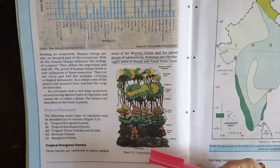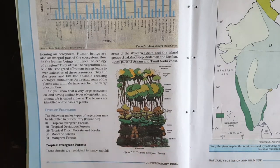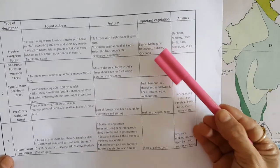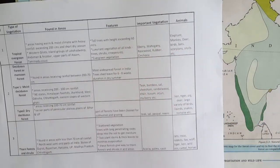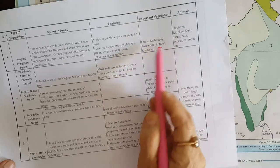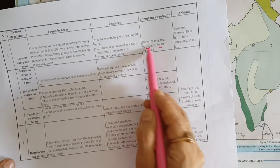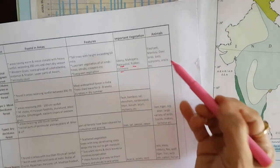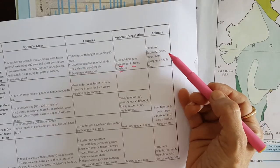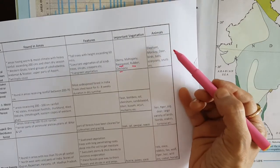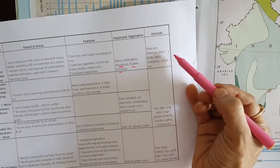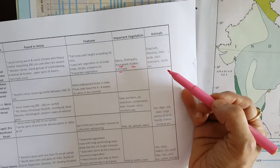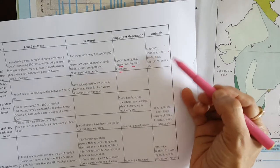Important vegetation of evergreen forests includes Ebony, Mahogany, Rubber, Rosewood, and Cinchona. The important animals found in tropical evergreen forests are elephant, monkey, deer, various types of birds, bats, scorpions, and snails.